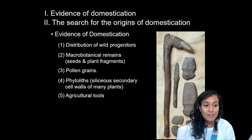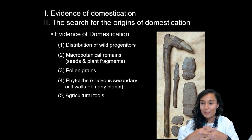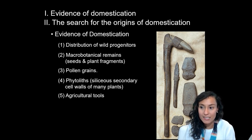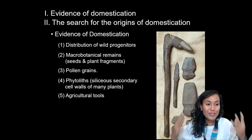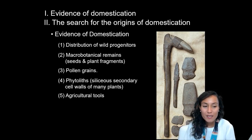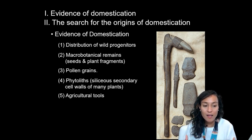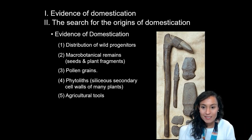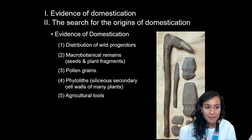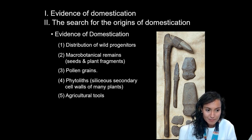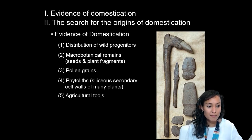In addition to these scientific forms of analysis associated with phytoliths, pollens, and macro-botanicals, we also have the straightforward material culture associated with the development of agriculture — agricultural tools which developed in response to domestication. Things like threshing sledges, which you see on the slide behind me, as well as large groundstones for digging, knives for cutting, and all sorts of implements like this.